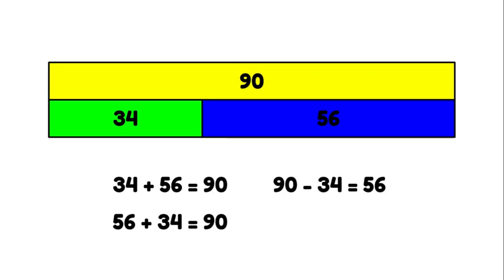They can also learn the relationship of subtraction here. If I have 90 and 34 is taken away, the other part that's going to be left is 56. And the other way around, if I have a total of 90 and take away 56, 34 is going to be left.